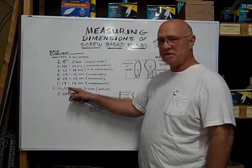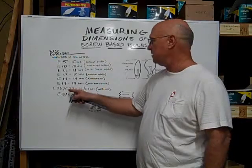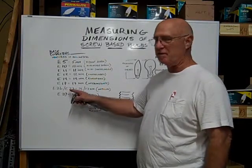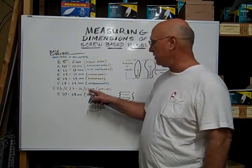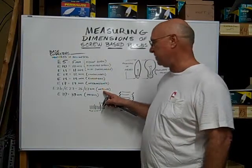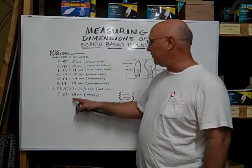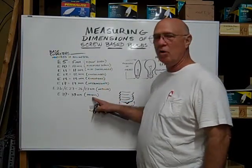The E26 is the standard household size screw base. It's also called an E27. It's 26 or 27 millimeters. It's called a medium screw base. The largest one is an E39, 39 millimeters, or a mogul base.